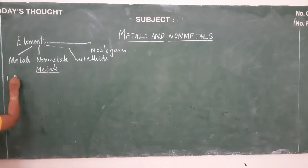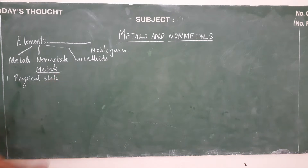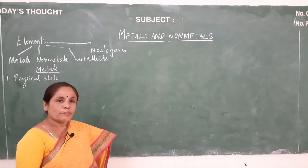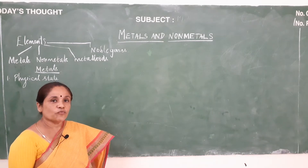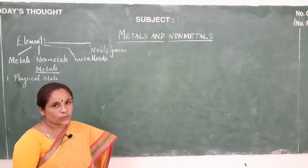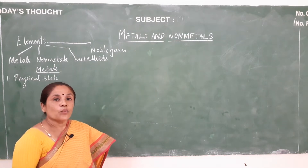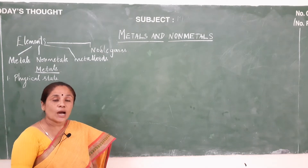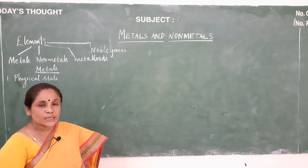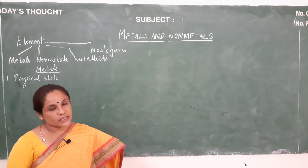The first property is physical state. All metals are solids at room temperature, and there is an exception for mercury, which is a liquid metal. There are a few other elements which become liquid when the temperature is slightly raised above room temperature — for example, gallium, cesium, rubidium, etc.